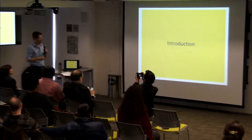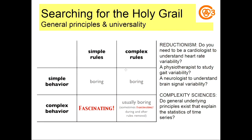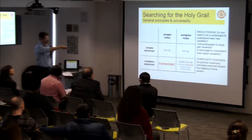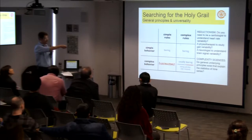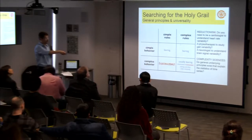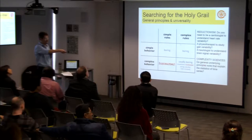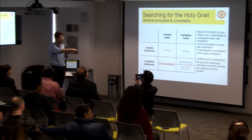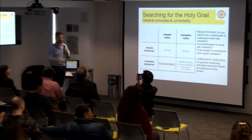My question is: in order to understand heart rate variability, do you need to be a cardiologist? To understand human gait, do you need to be a physiotherapist? To understand brain signals, do you need to be a neurologist? That would be a reductionist perspective. From the complexity sciences, we look for general underlying principles that may explain the statistics of all of these time series.